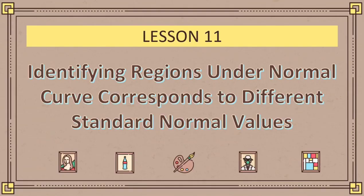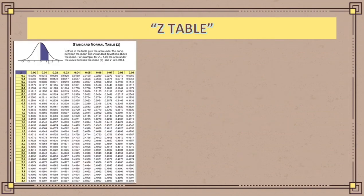Hello and good day everyone. Today we will be talking about identifying regions under the normal curve that correspond to different standard normal values. Before we proceed, let me first show you a table — this is what we call a z-table. This table is important for you to have because it will serve as the basis for finding the area of our given z-value.